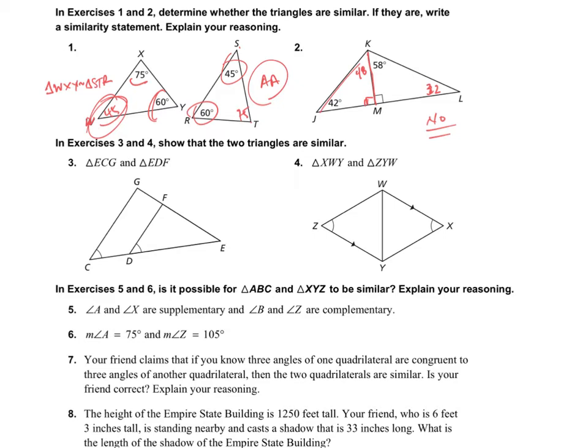Over here, show that the two triangles are similar. Well, if these two are congruent, then that means these lines are parallel. Why? Because of the converse of corresponding angles. And if these are parallel, these would be congruent. So now you have the two triangles, E, C, G, and EF, EDF, right here, similar.